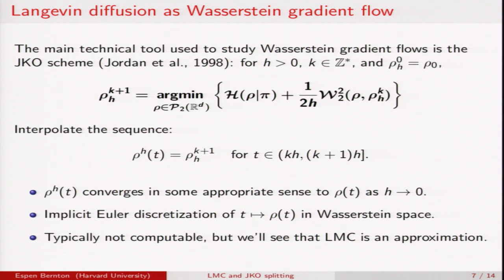The main technical tool to study Wasserstein gradient flows is this JKO scheme. JKO stands for Jordan, Kindler and Otto who first introduced this. It consists in constructing a sequence of distributions in this way, and note that this is essentially a prox step, but on the space of probability distributions metrised by the Wasserstein distance. You can show that if you interpolate the sequence of distributions appropriately and take the steps to go to zero, then in some sense you converge to the solution of the Fokker-Planck equation.